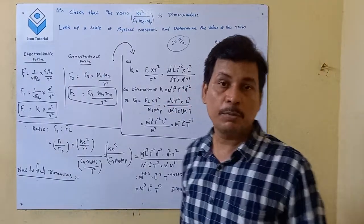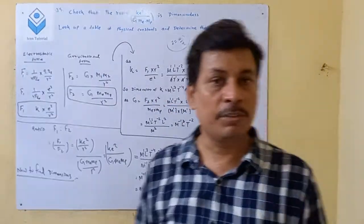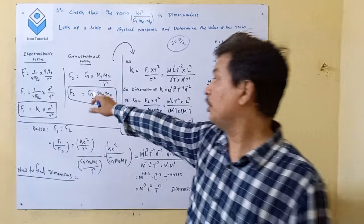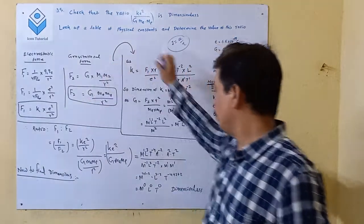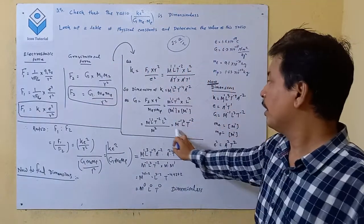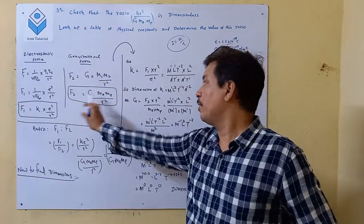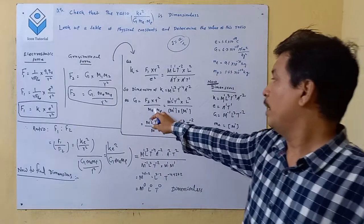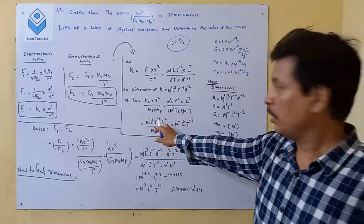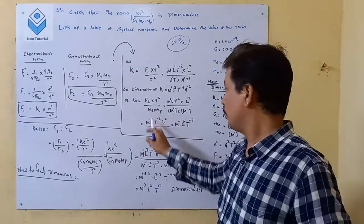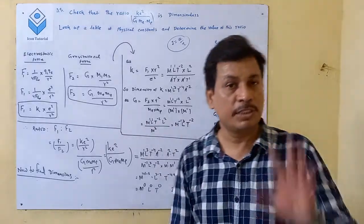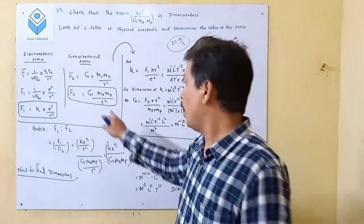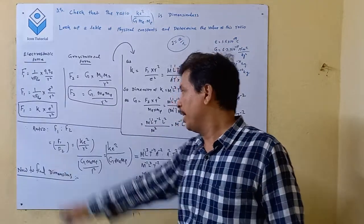Similarly, for the gravitational force, F = G·m1·m2 / r². From this, G = F·r² / (me·mp), where me is mass of electron and mp is mass of proton. In the same way, we calculate the dimensional formula of G.